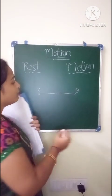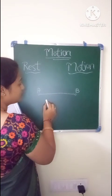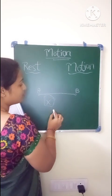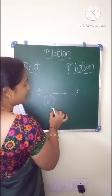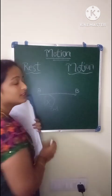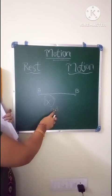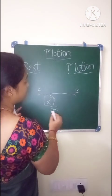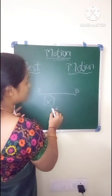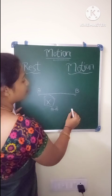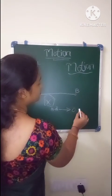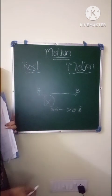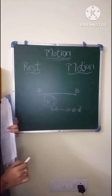For example, if we have a shop at point X, and a bike is standing in front of the shop, then we say that the bike is at rest in front of the shop. If it moves, we notice the motion with respect to the shop — the shop is the reference point.